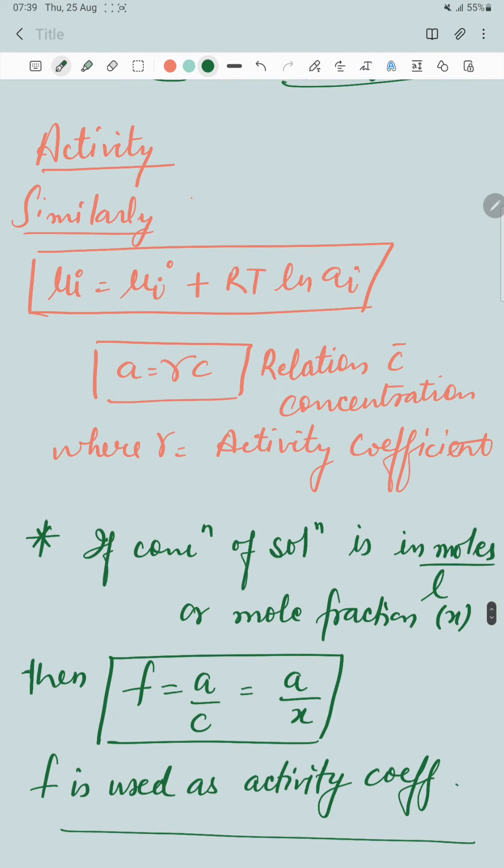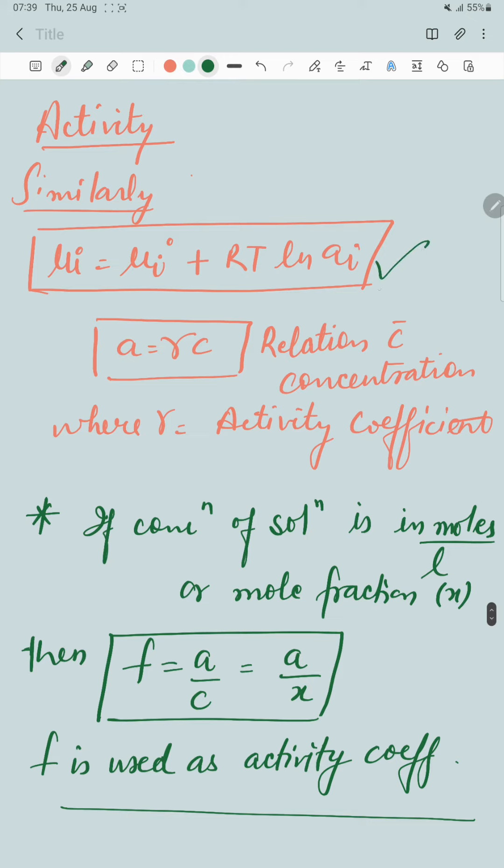So for activity, similarly, this is the chemical potential term and this is the relation with concentration, and here psi is the activity coefficient. But if you take concentration of solution in moles per liter or mole fraction, then psi becomes f in case of activity coefficient. Thank you and have a nice day.